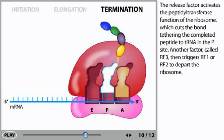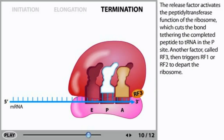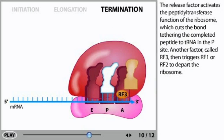The release factor activates the peptidyl transferase function of the ribosome, which cuts the bond tethering the completed peptide to the tRNA in the P site. Another factor called RF3 then triggers RF1 or RF2 to depart the ribosome.